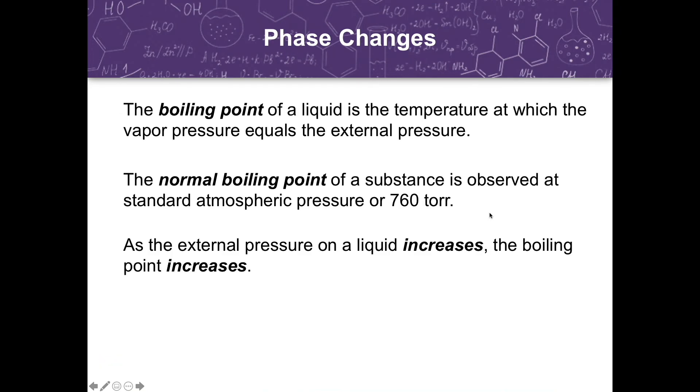The boiling point of a liquid is the temperature at which the vapor pressure equals the external pressure, while the normal boiling point of a substance is observed at standard atmospheric pressure of 760 torr. As the external pressure on a liquid increases, the boiling point also increases.